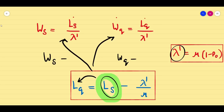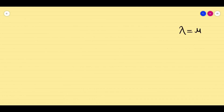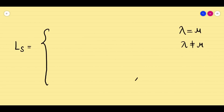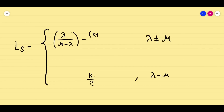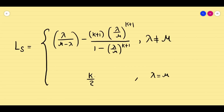Now let us write the formula for Ls, the length of the system. Since it is a finite capacity problem, we split into two cases based on lambda and mu. When lambda equals mu, the formula is very simple: Ls equals k divided by 2, where k is the system capacity. When lambda is not equal to mu, the formula is: Ls equals [lambda/mu minus (k+1)(lambda/mu)^(k+1)] divided by [1 minus (lambda/mu)^(k+1)].